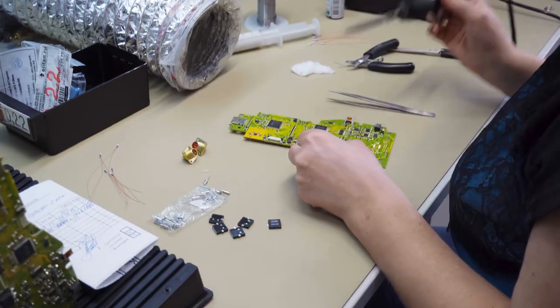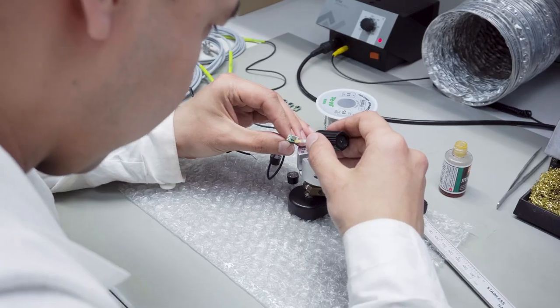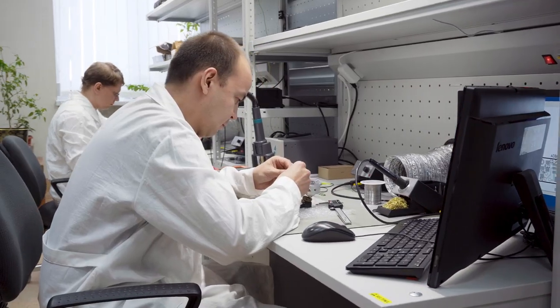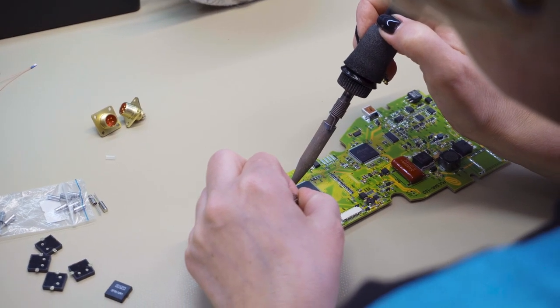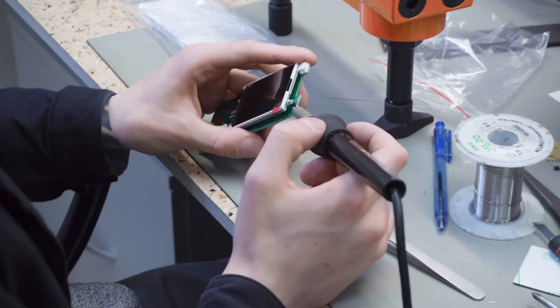The manual part of the assembly is used only at the final stage of production under the strict control of the design department and quality control department. All workplaces are equipped with modern soldering equipment and assembly tools. They also have necessary anti-static protection.